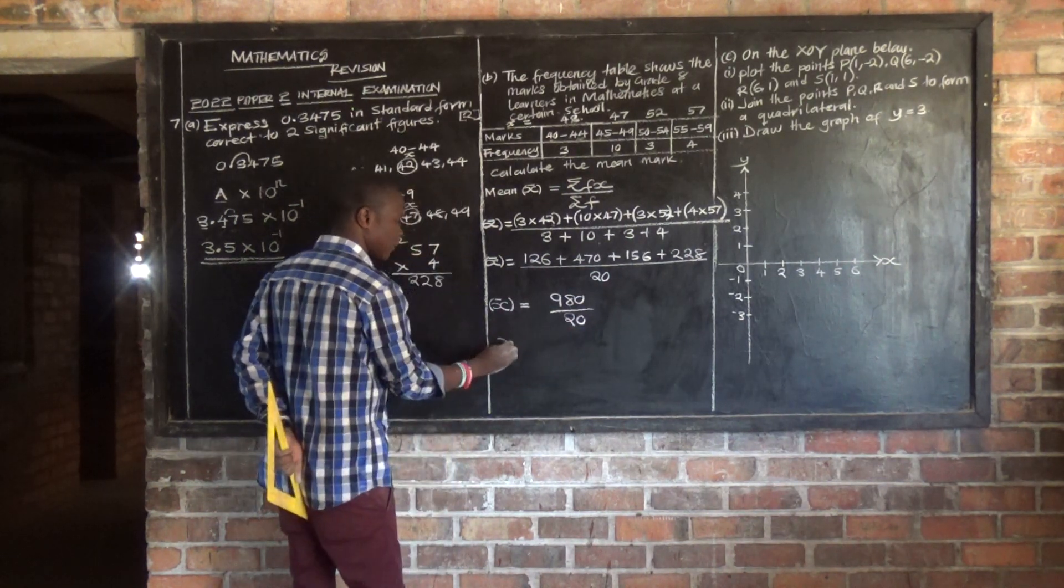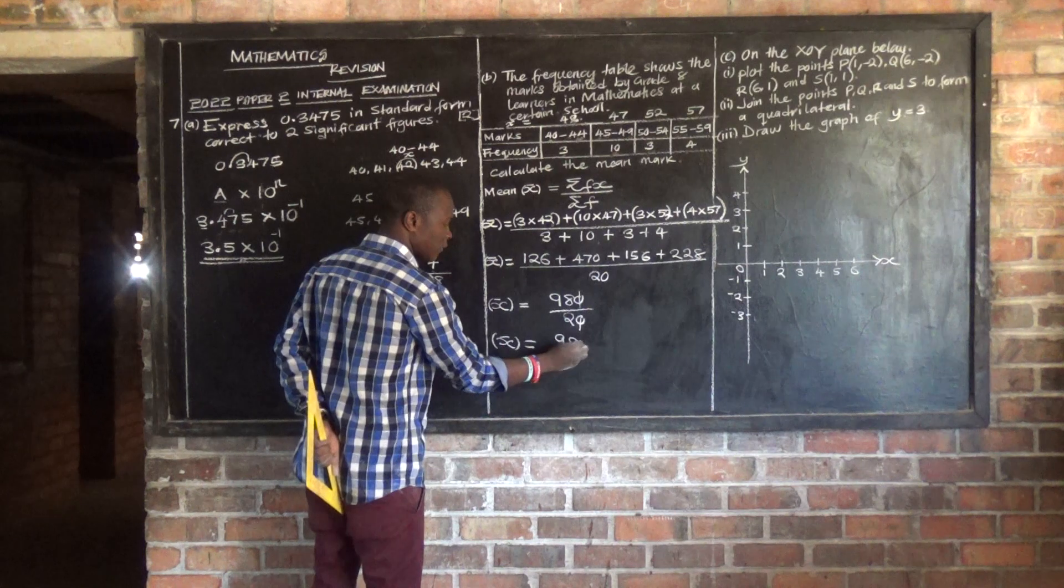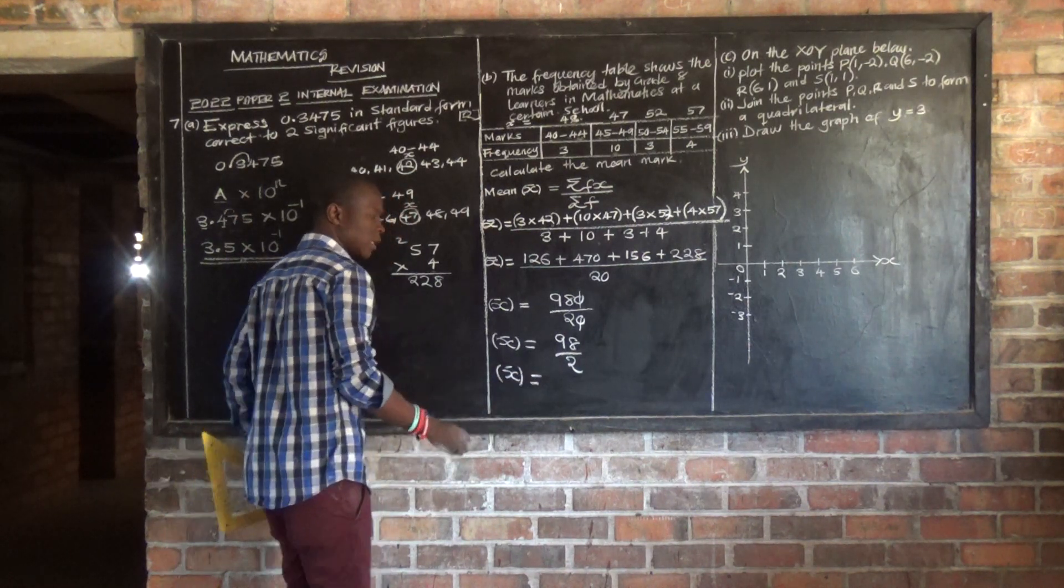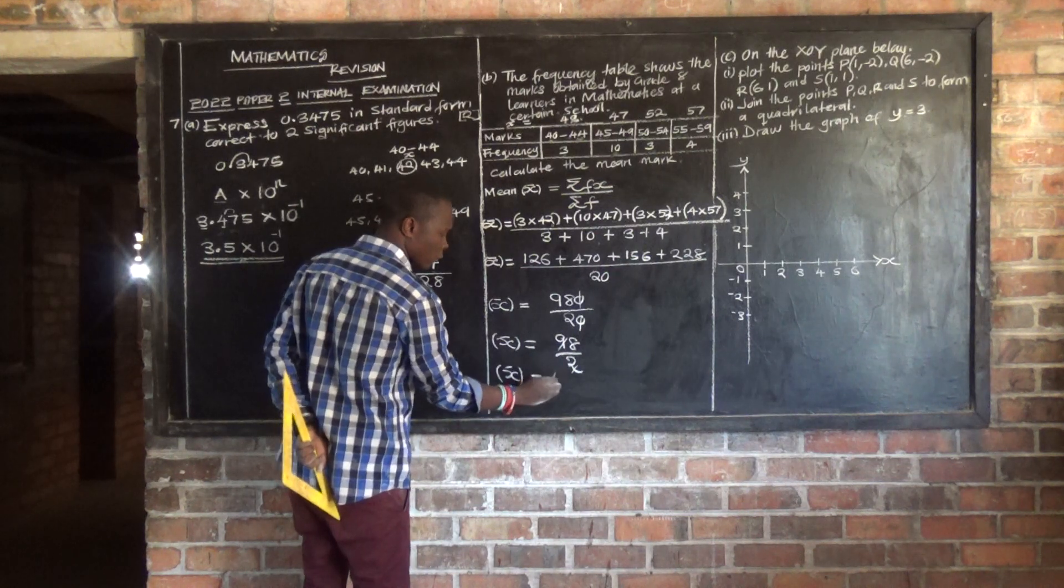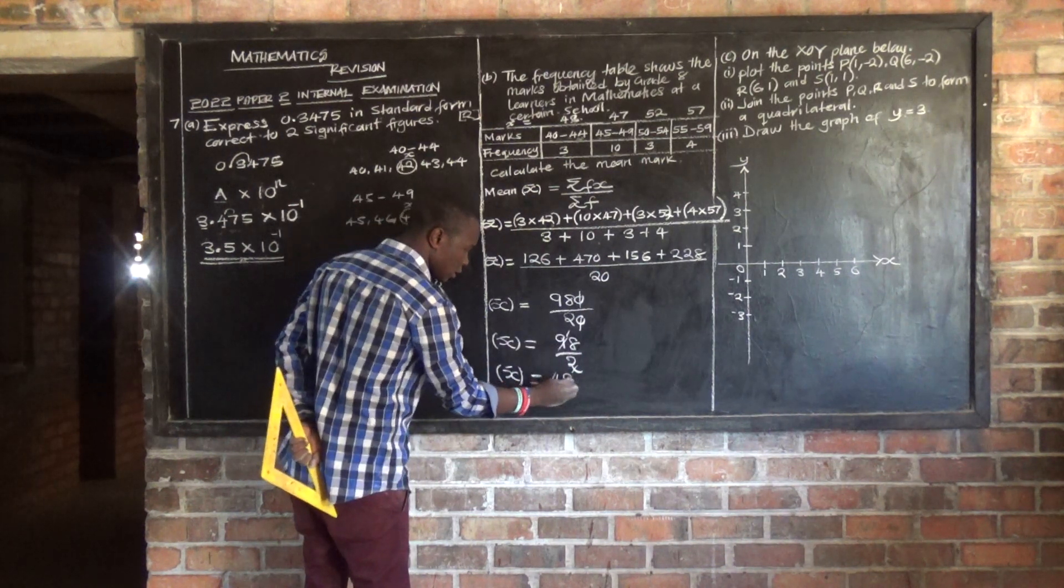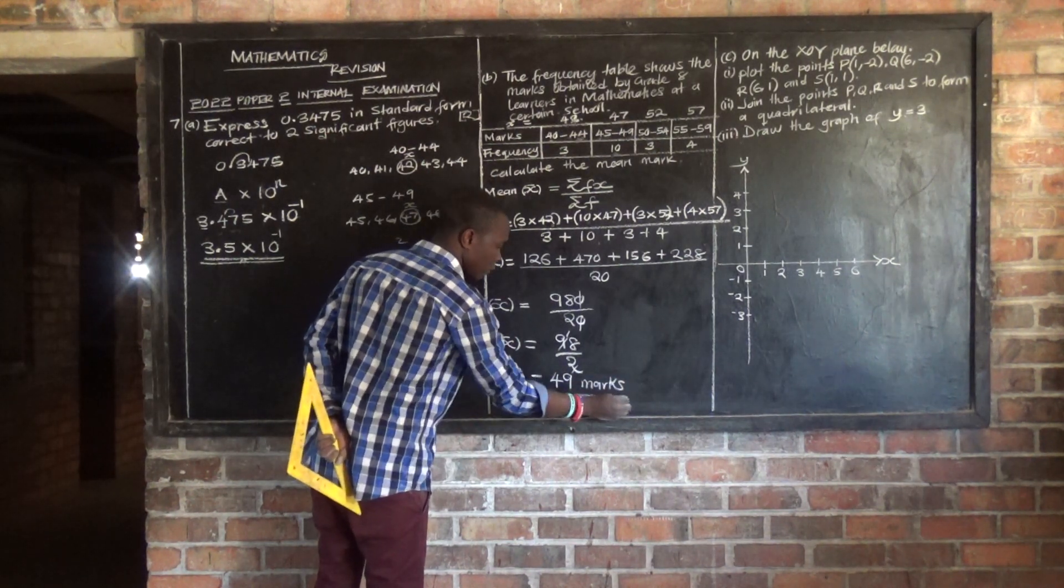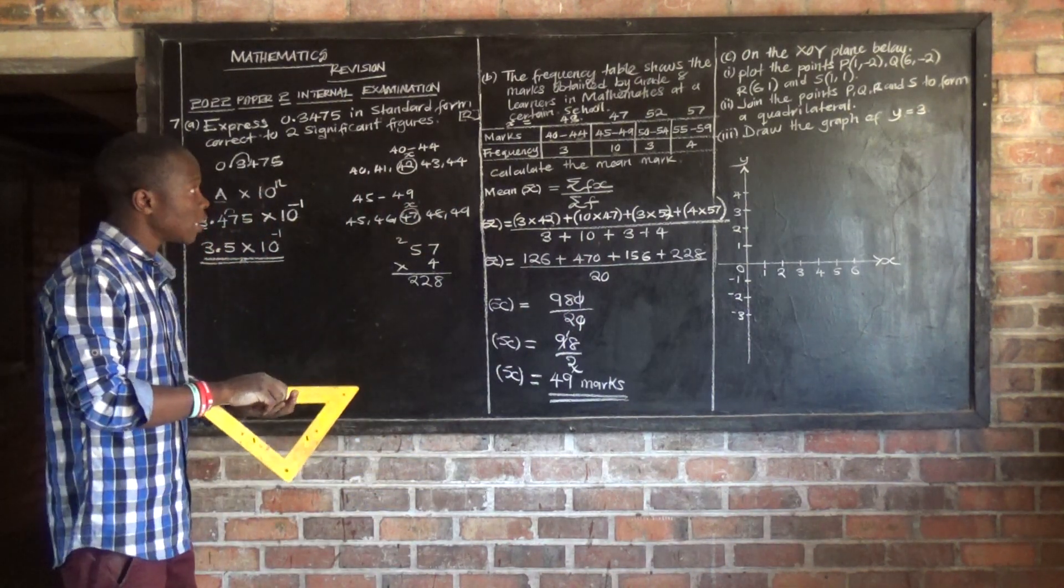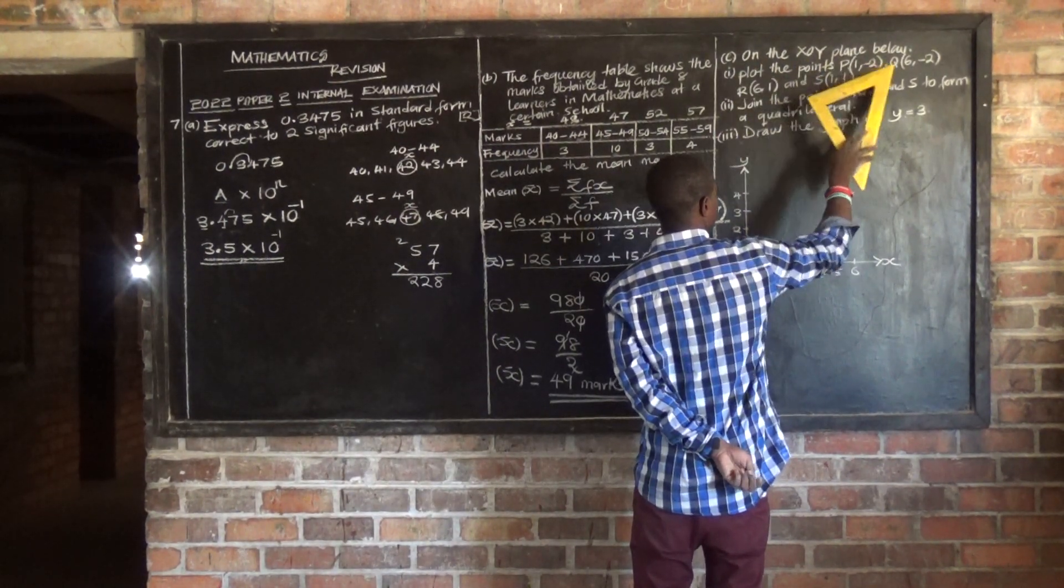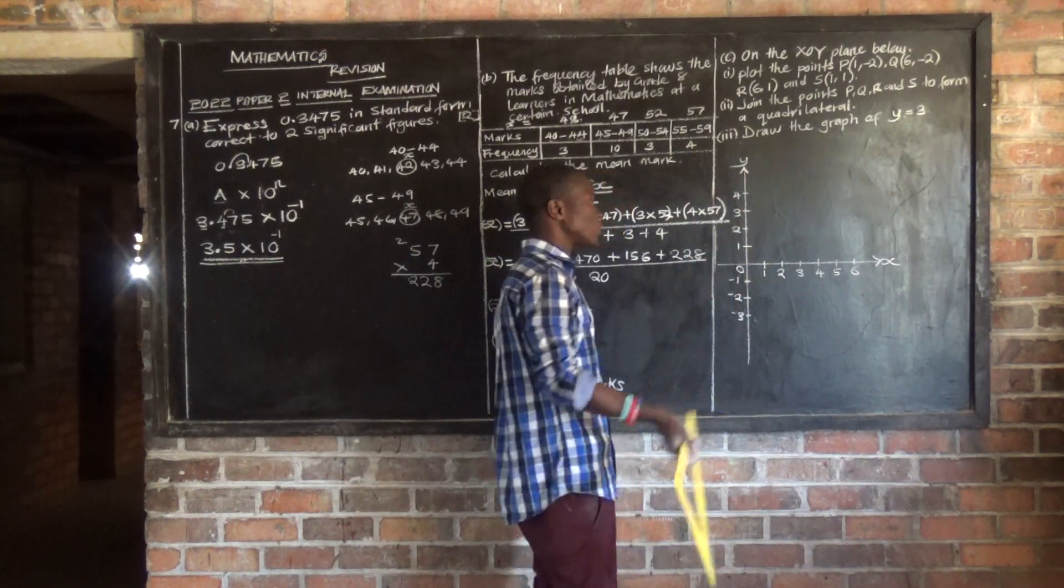X bar is equal to, when you add the numerator you get 1344 divided by 27. When you divide this, we are going to get 49.8, so the answer is 49.8 marks. That's our mean.